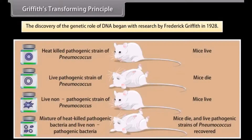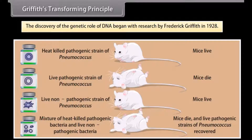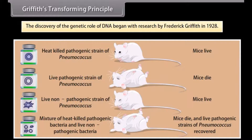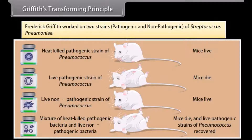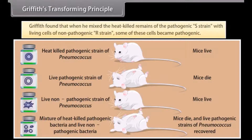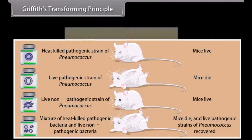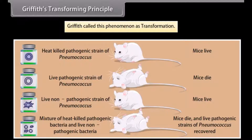The discovery of the genetic role of DNA began with research by Frederick Griffith in 1928. Griffith worked on two strains — pathogenic and non-pathogenic — of Streptococcus pneumoniae. He found that when he mixed the heat-killed remains of the pathogenic S strain with living cells of the non-pathogenic R strain, some of these cells became pathogenic. Griffith called this phenomenon transformation.